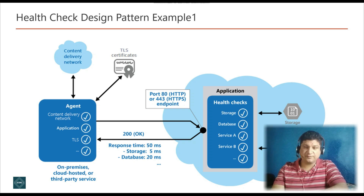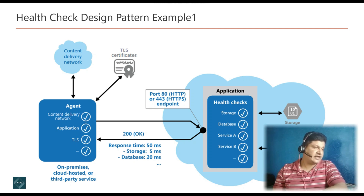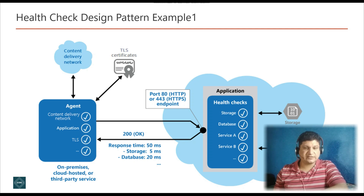The health monitoring code in the application might also run other checks to determine the availability and response time of cloud storage or a database, and the status of other resources or services that the application uses. In this diagram, we have an application and an agent. The agent is a monitoring tool that calls the application's health check endpoints to check the status of storage, database, and all the infrastructure and resources. If it receives a 200 response, then everything is fine. Otherwise, it creates an alert and notification for the support team that your services are down.